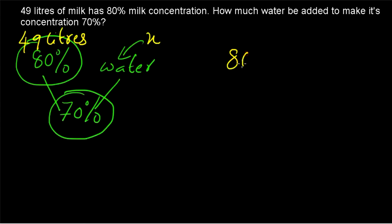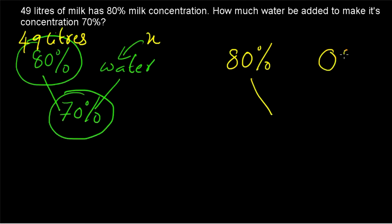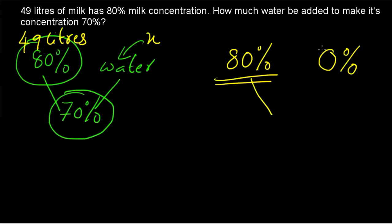We can use the rule of allegation since the milk solution and water are being combined to form a resultant solution. The most important point is that all three quantities must represent the same thing. We have 80% milk solution; water has zero percent milk. So we write zero for water. An 80% milk solution is getting added with a 0% milk solution (water) to get a 70% milk solution.